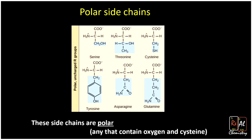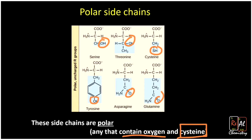Here are all the polar side chains. The way we can identify them is that they contain oxygen — so almost always our polar side chains contain oxygen. You can see oxygen in nearly every one of them. The only exception to that is cysteine. Cysteine has a sulfur and a hydrogen right on the end of its side chain, and that turns out to be polar as well. So cysteine is polar even though it doesn't have an oxygen — that's an important one you might get wrong unless you remember it. So if it contains oxygen or if it's cysteine, it's generally a polar side chain.